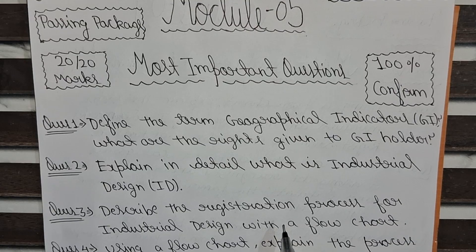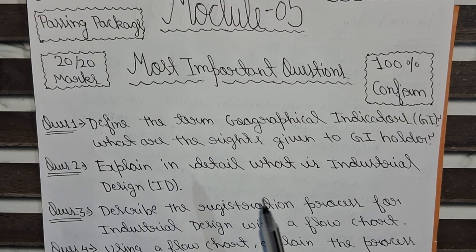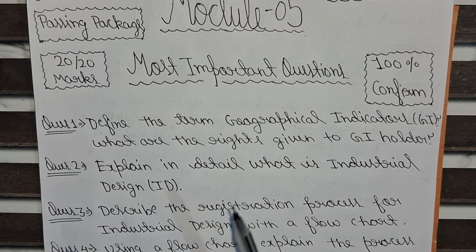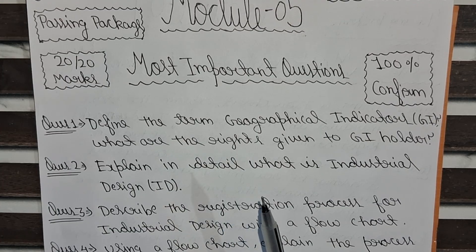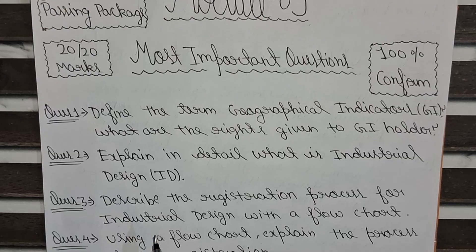Our third question is: describe the registration process for Industrial Design with a flowchart. This question covers the step-by-step registration procedure of industrial design, with special focus on flowchart representation for full marks.